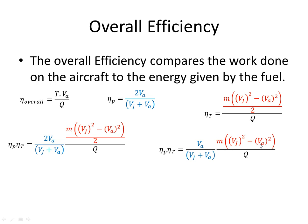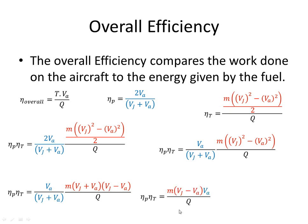So that's this equation — getting rid of the 2 multiplied by a half, it's gone — and Vj² minus Va² is just (Vj plus Va)(Vj minus Va). Converting that and canceling terms, that gives m(Vj minus Va) which is thrust. So it becomes thrust times Va over Q. The propulsive efficiency multiplied by the thermal efficiency equals that, and we've already seen that equals the overall efficiency. So the overall efficiency is equal to the propulsive efficiency multiplied by the thermal efficiency.